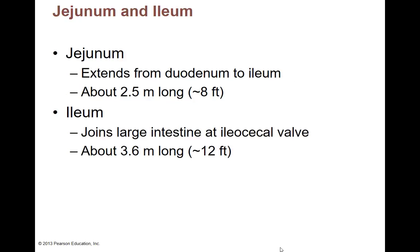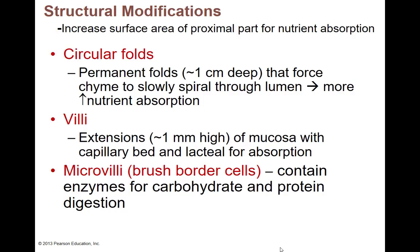The jejunum goes from the duodenum to the ileum and is about eight feet. The ileum joins up with the large intestine at the ileocecal valve and is about twelve feet — though it depends on the person. Both the jejunum and the ileum do essentially the same thing. Inside, since we've got lots of absorption, we need lots of surface area. In our small intestine, we have folds on top of folds on top of folds — literally.